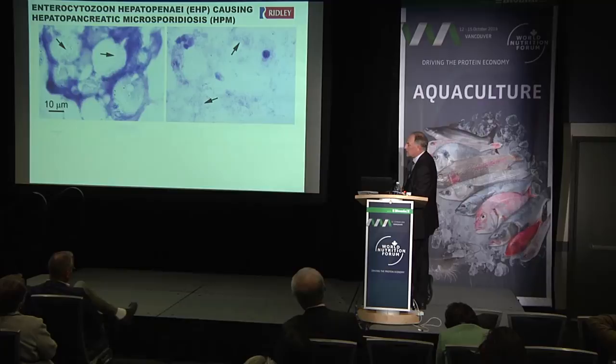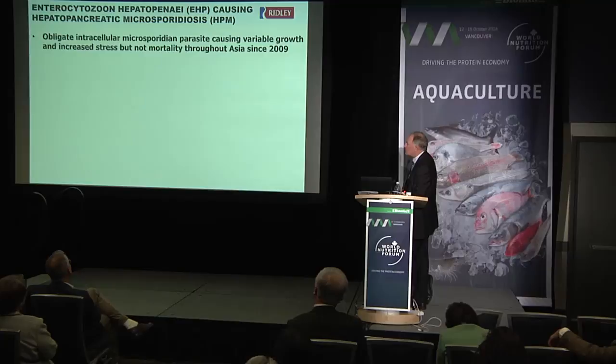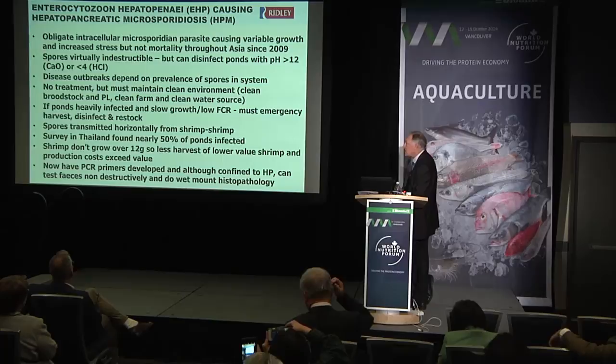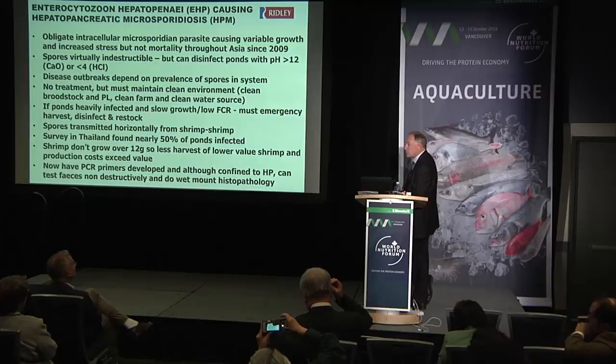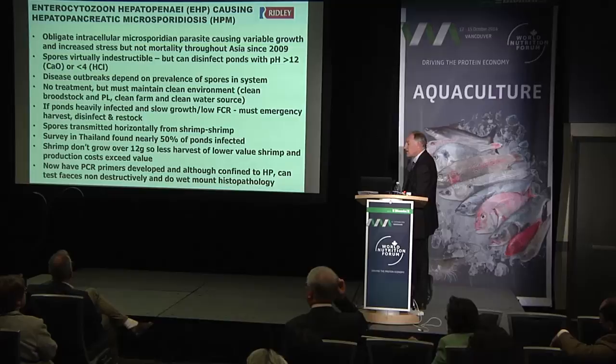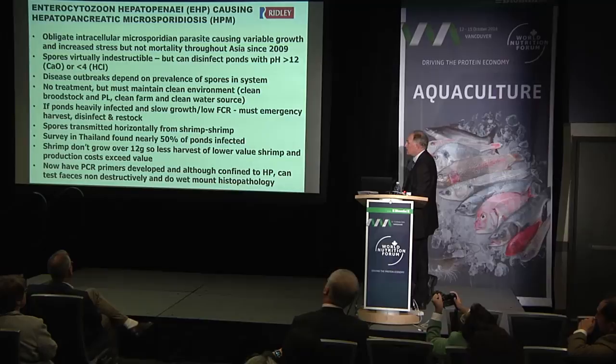The other problem that has emerged recently is this microsporidium parasite, which is a kind of fungus. We find it now occurs in up to 50% of ponds and it's very difficult to get rid of. You have to maintain the environment as clean as possible, keep broodstock and post larvae free of it, and clean the farm and the water. If ponds become heavily infected, you just have to harvest and remove the animals. The spores are transferred directly from shrimp to shrimp, which is unusual for microsporidium and makes it very difficult. Shrimp don't die, but they don't grow beyond 12 grams, so they have less value — the cost of culture exceeds the value you get for those shrimp.